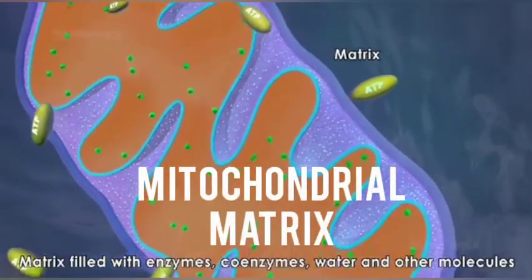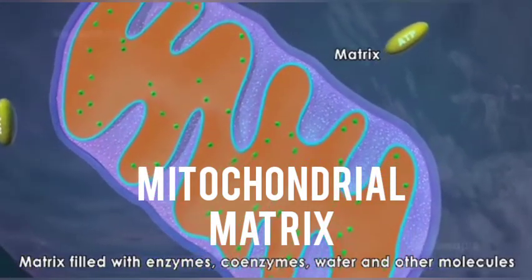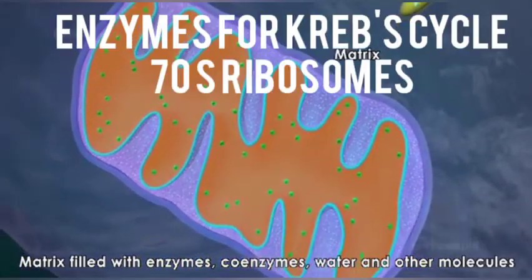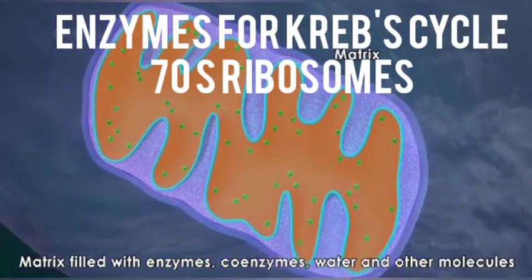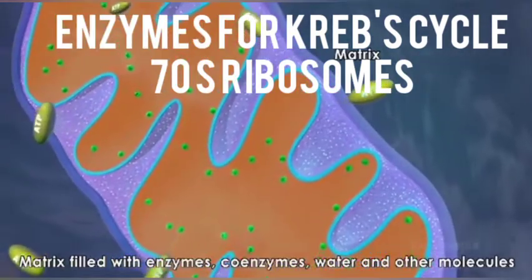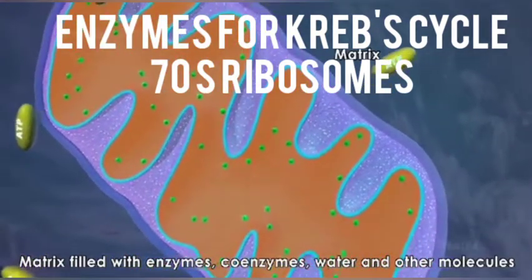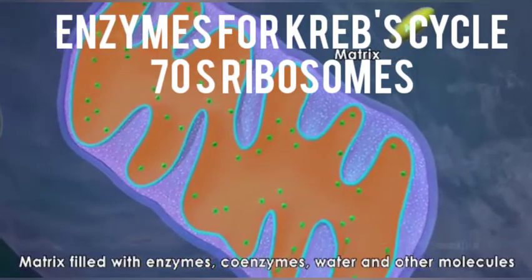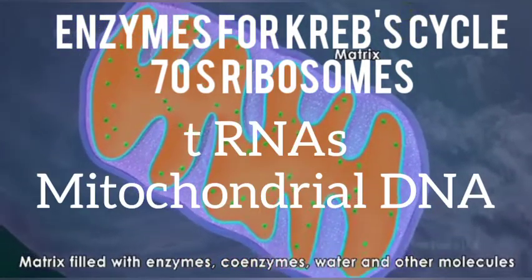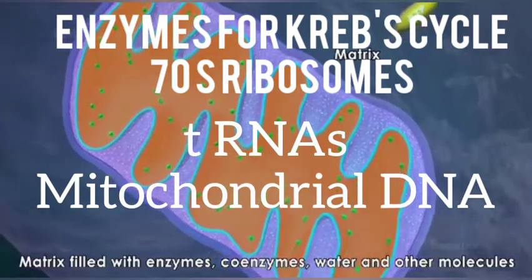Matrix is a complex mixture of proteins and lipids. Matrix contains: 1. Enzymes necessary for Krebs cycle, 2. Mitochondrial 70S ribosomes, 3. tRNAs, 4. Mitochondrial DNA.